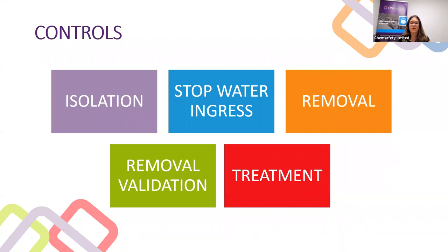We want to stop the water ingress because if we don't, it doesn't matter if we remediate — the problem will just come back. We need to identify where the water ingress has happened and how to stop it. Sometimes it's very simple; if there's been a flood, for example, we know exactly what the water source was and it's typically quite easy to fix.